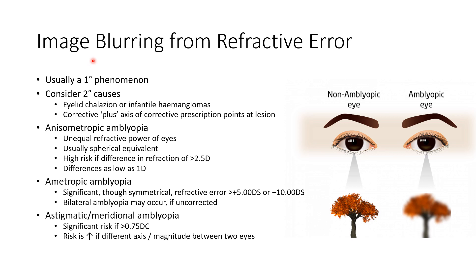The second cause of amblyopia is image blurring from refractive error. It is usually a primary phenomenon. However, we should consider secondary causes like eyelid chalazion or infantile hemangiomas, especially when the corrective axis of the corrective prescription points at the lesion.